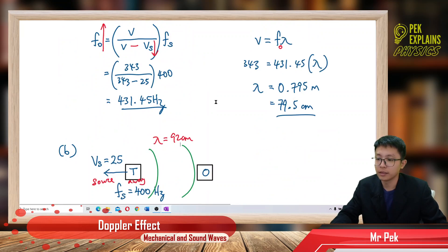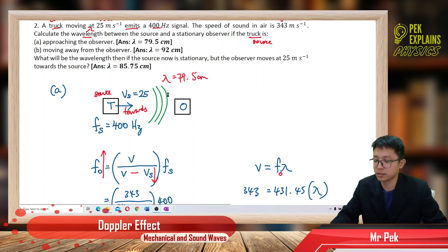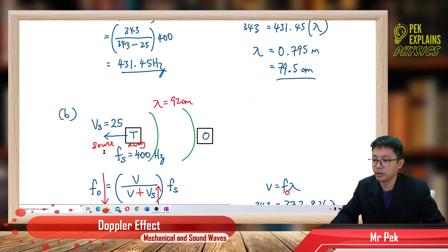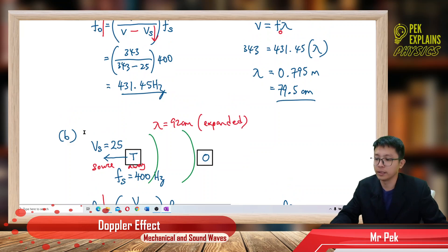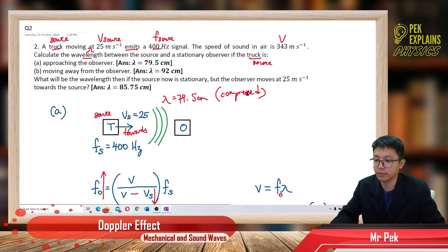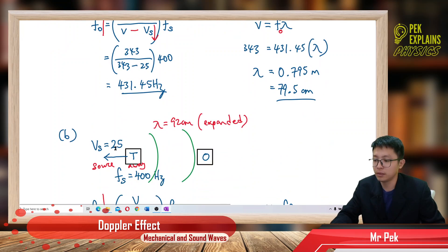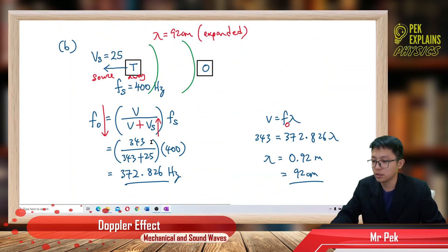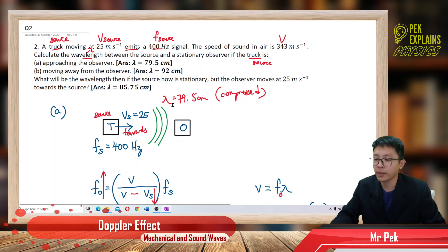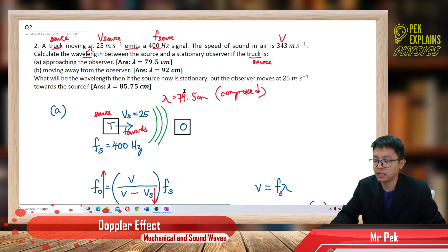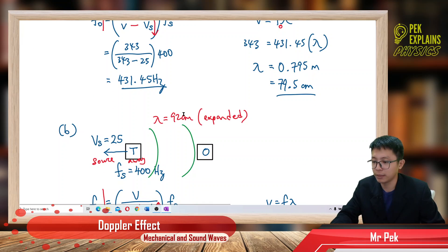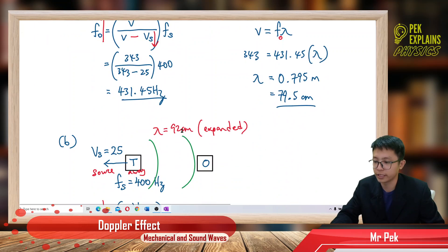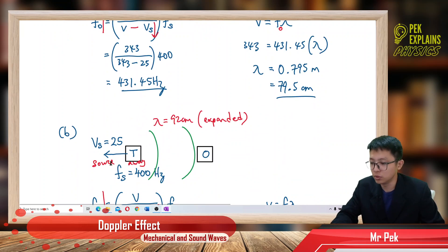When the source is moving towards the observer, the wavelength is being compressed. When the source is moving away, the wavelength becomes expanded and longer. As long as the source is moving, the wavelength will change — either becoming a smaller compressed wavelength or a longer expanded wavelength.